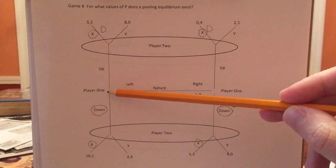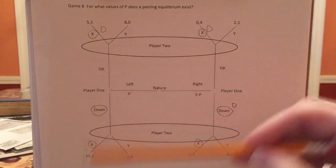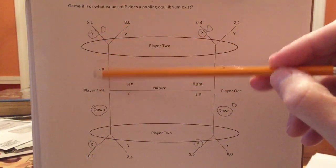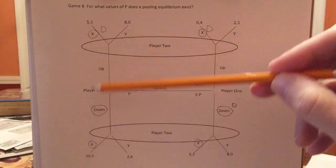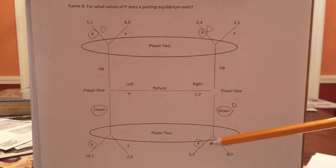Player one, in this equilibrium, do you regret down? You're getting 10. Up, if you've gone to something different, you would have gotten five. So no, you do not regret going down, given player two's strategy of X on top and X on the bottom.